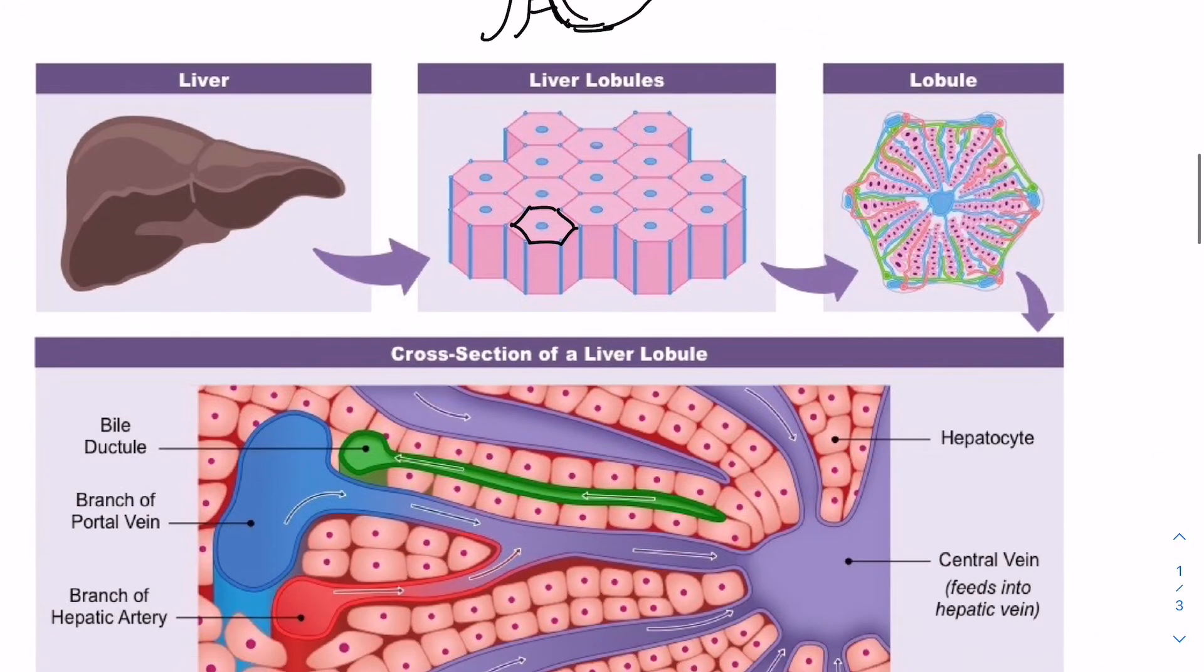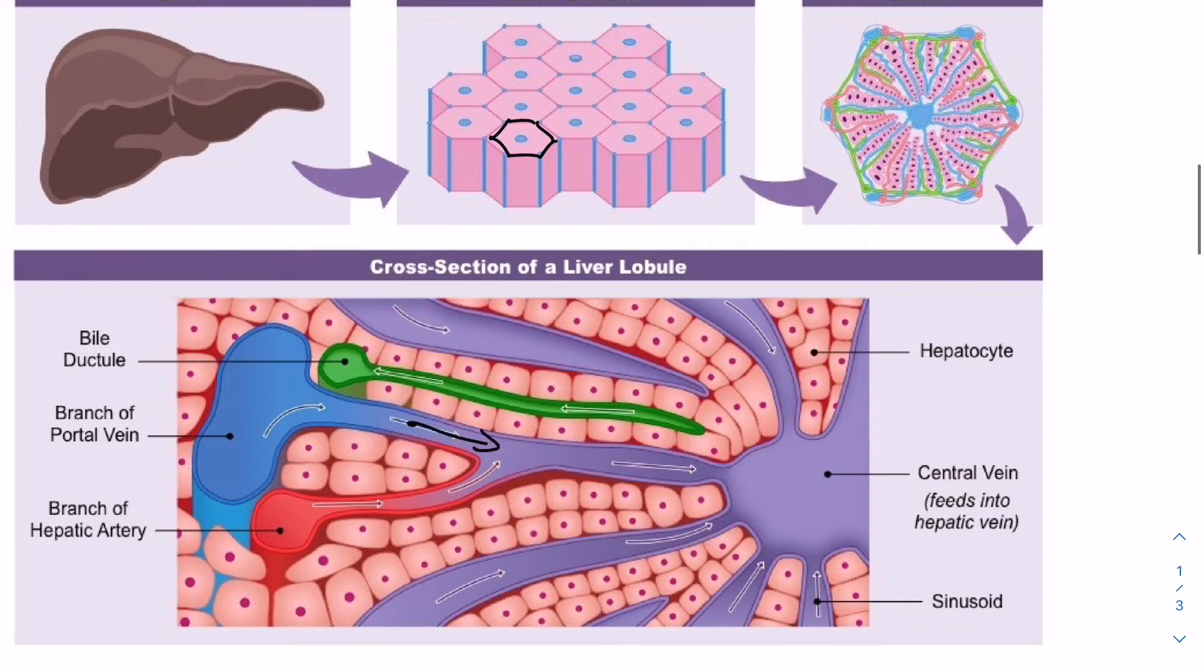So these vessels drain into these capillary-like structures called sinusoids. And this is where the sinusoids are on the diagram. So this is actually where the material exchange is happening between the sinusoids and the hepatocytes, depending on how we want to alter the blood glucose composition.